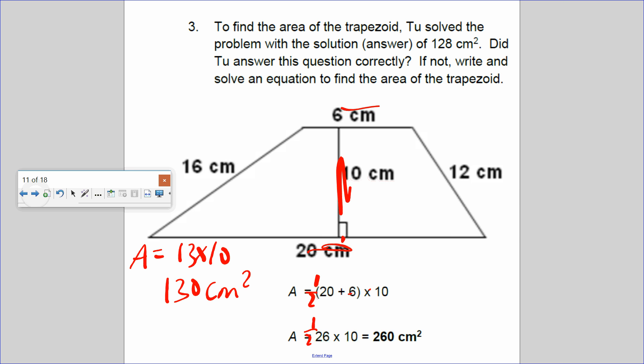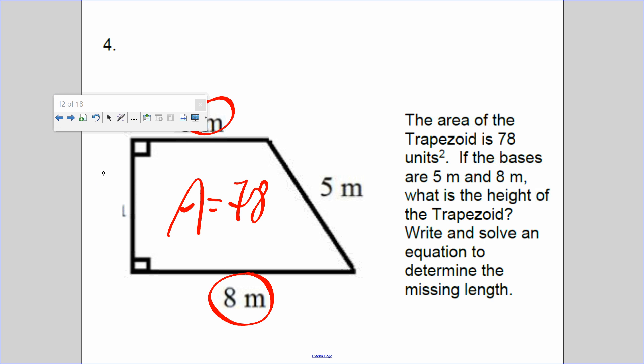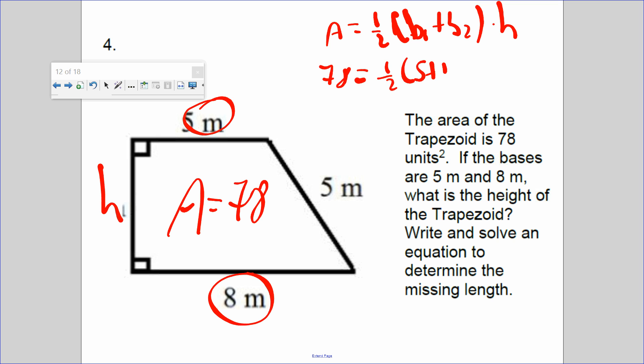Let's do our last problem, number four. The area of this trapezoid is 78 square units. The bases are 5 meters and 8 meters. What is the height? Write and solve an equation. So area equals half b1 plus base 2 times height. We know the area is 78, we know the two bases are 5 and 8, but we don't know the height.